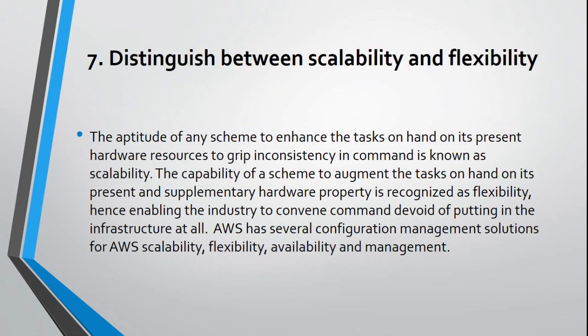Question 7: Distinguish between scalability and flexibility. The aptitude of any scheme to enhance the tasks on hand on its present hardware resources to handle inconsistency in demand is known as scalability. The capability of a scheme to augment the tasks on hand on its present and supplementary hardware is recognized as flexibility, enabling the industry to meet demand without putting in infrastructure at all. AWS has several configuration management solutions for scalability, flexibility, availability, and management.